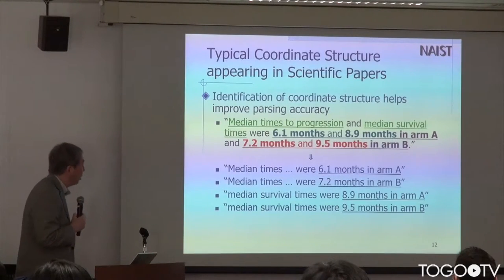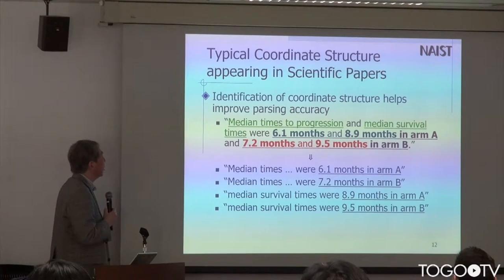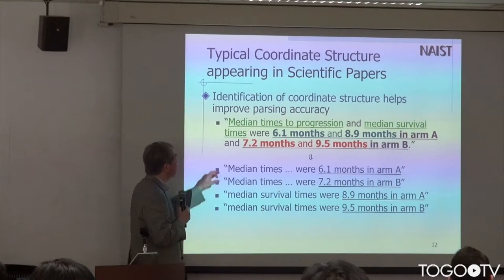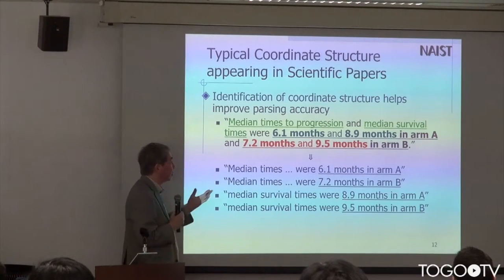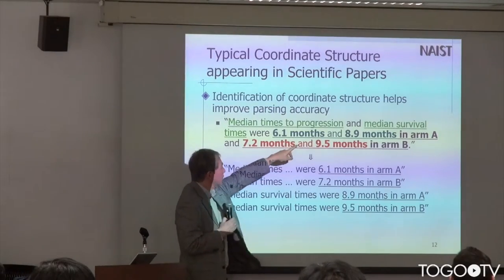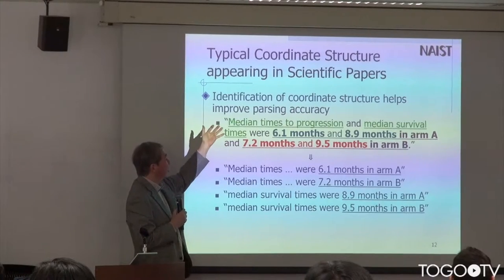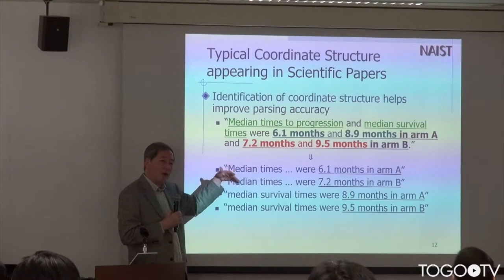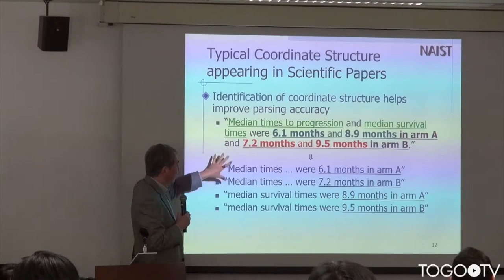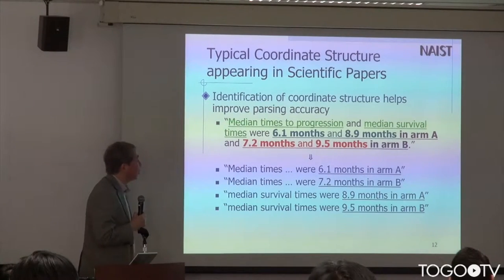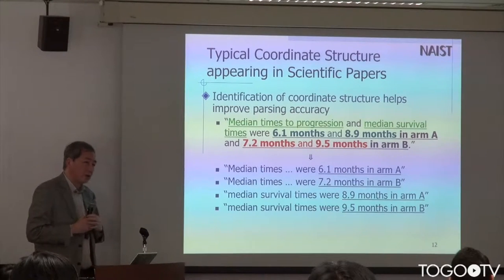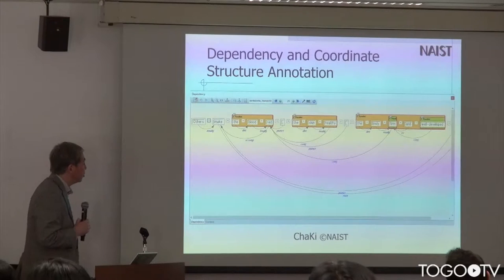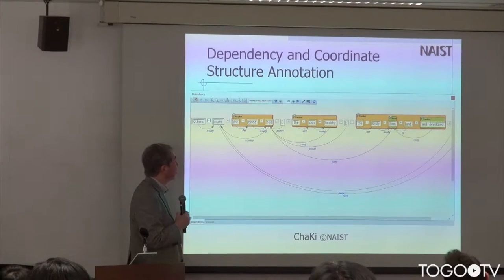Another tool we are constructing is a parser especially focusing on coordinate structures, which are frequently found in scientific literature. Expressions connected by coordination conjunctions — like 'and', 'or', 'as well as' — are common in scientific papers. A single expression may include four or more different descriptions. Analyzing this kind of structure correctly is important to extract entities and the special relationships between entities. We have developed tools to annotate coordination structures.